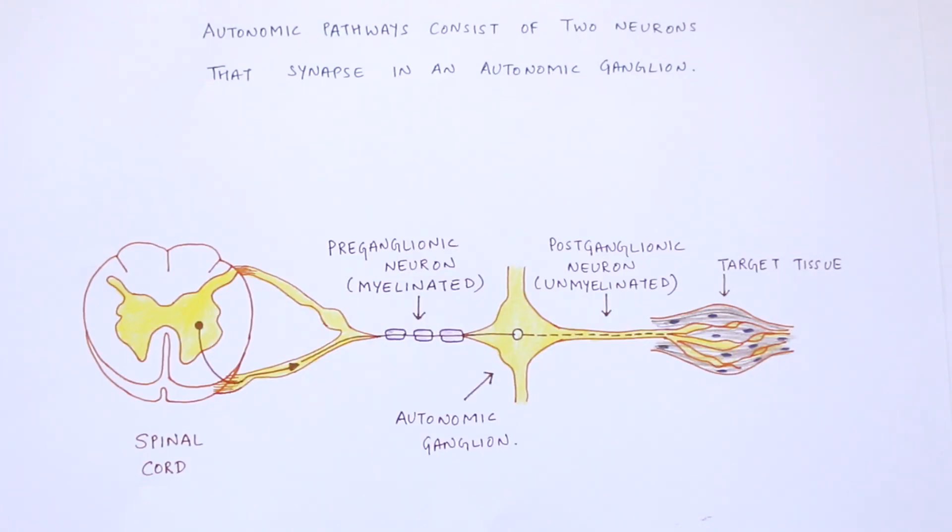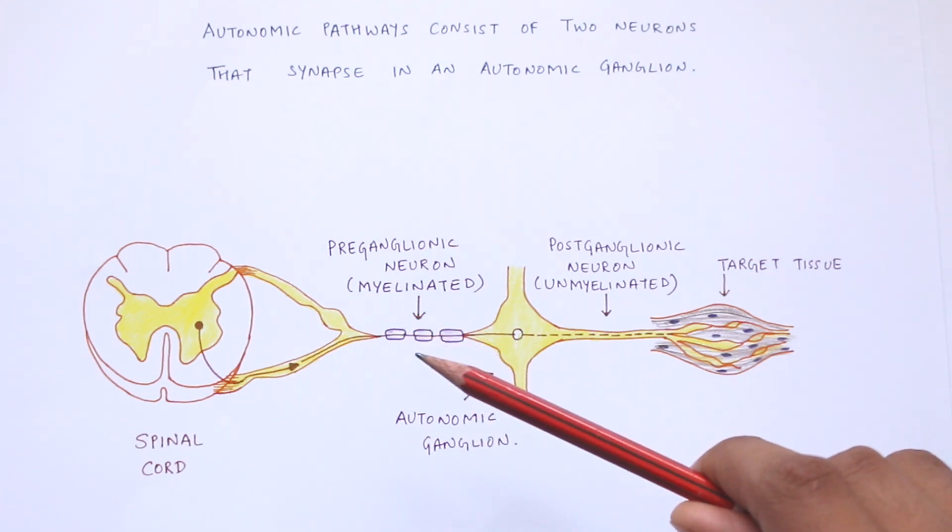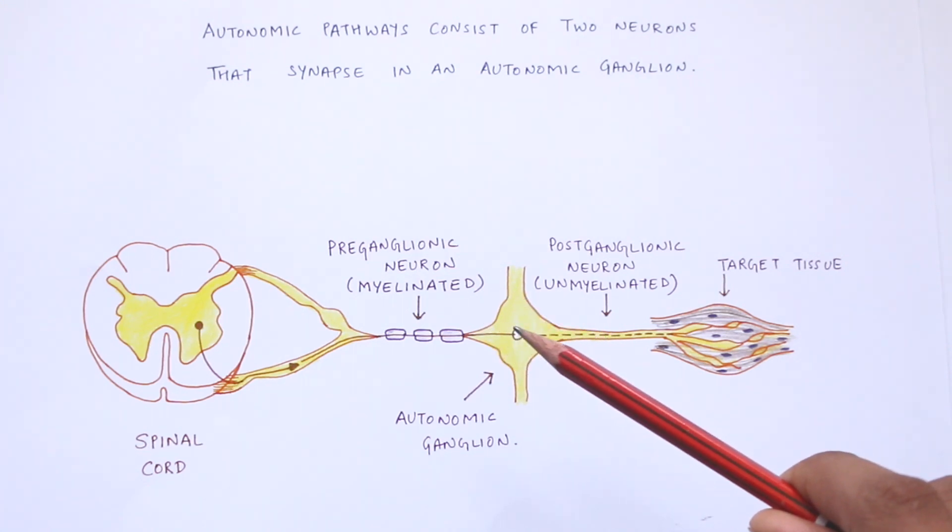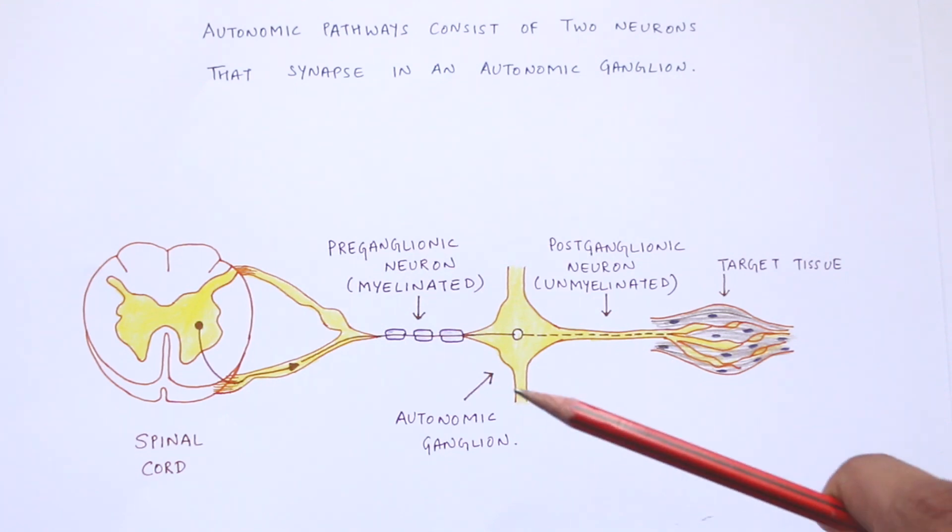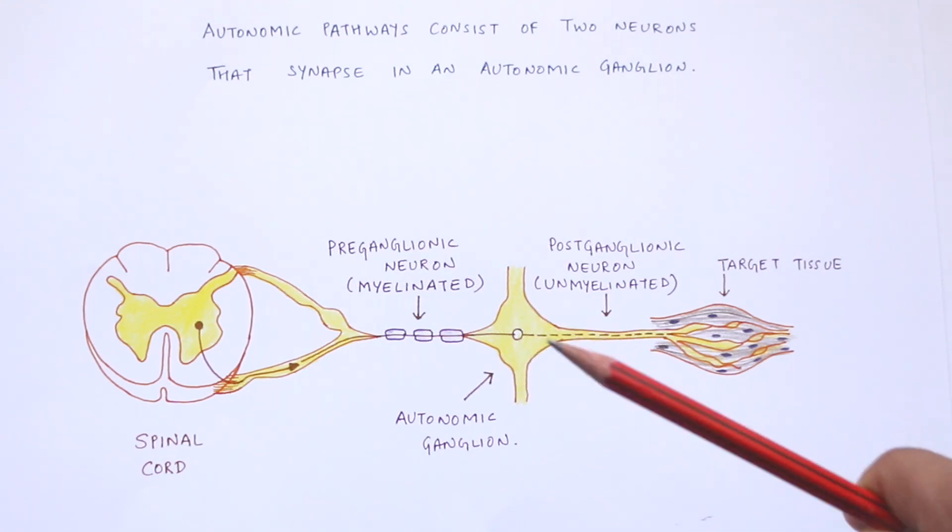Let us first look at the structure of the autonomic nervous system. The autonomic nervous system has a two-neuron structure. There is a preganglionic neuron which arises from the lateral horn of the spinal cord and synapses with a postganglionic neuron, which in turn leads to the effector organ. The synapse between two neurons occurs at an autonomic ganglia.